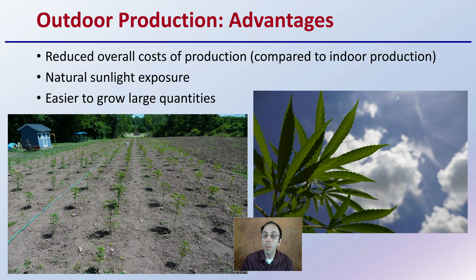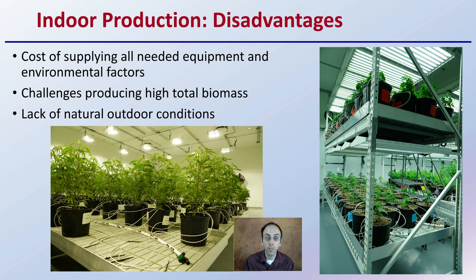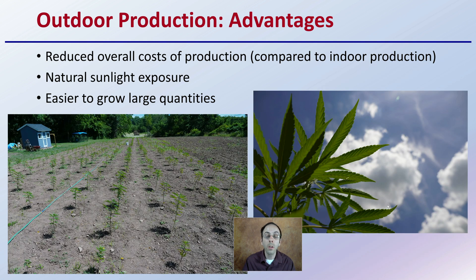For outdoor production, what are some of the advantages of growing outdoors? Overall, you have reduced cost of production compared to indoor, because you get natural sunlight exposure. You don't need lights with different wavelengths, changing out bulbs, or supplying electricity and cooling — natural sunlight is essentially free. It's also easier to grow large quantities because you're not constrained by that kind of lighting application.